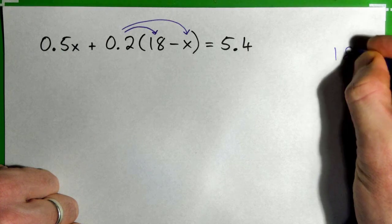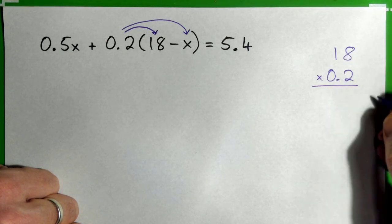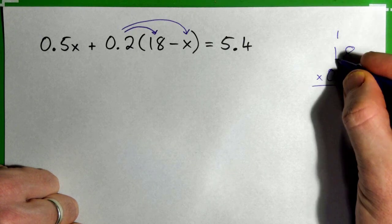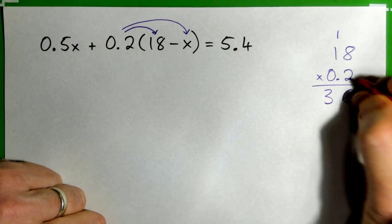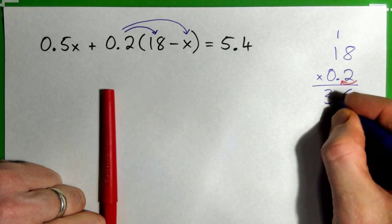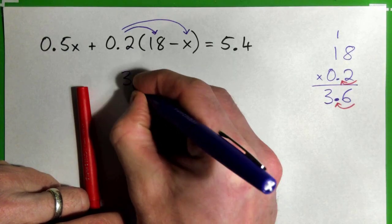Now 0.2 times 18, let's say that over here, 18 times 0.2, right? Multiply, okay? 2 times 8, 16, carry 1. 2 times 1 is 2 and 1 is 3. There's one decimal place in the multiplication, so there should be 1 in the answer. So that is 3.6. 0.2 times 18 is 3.6, right?